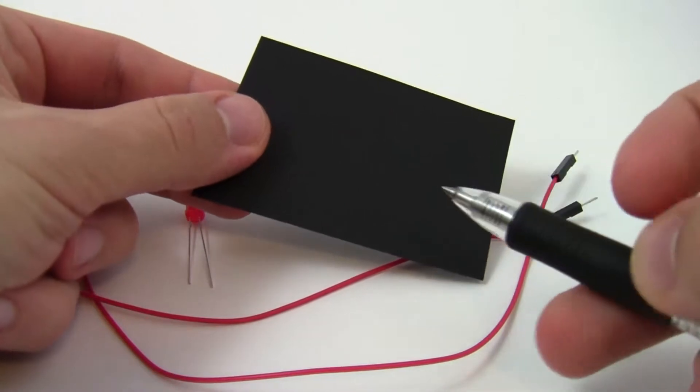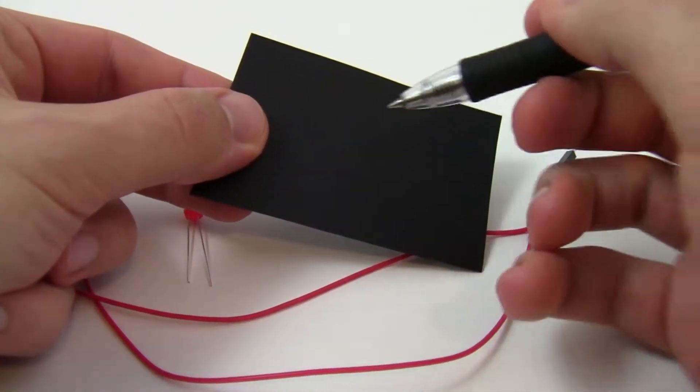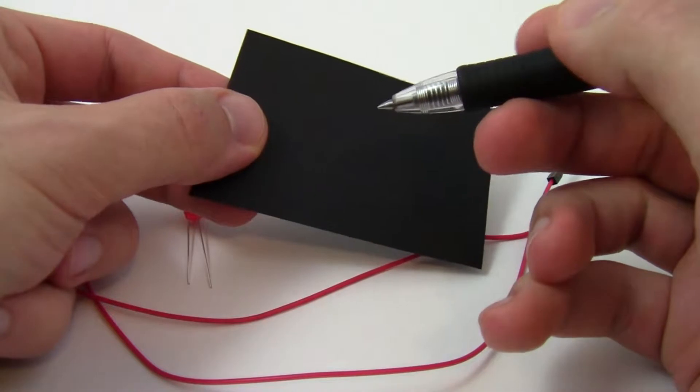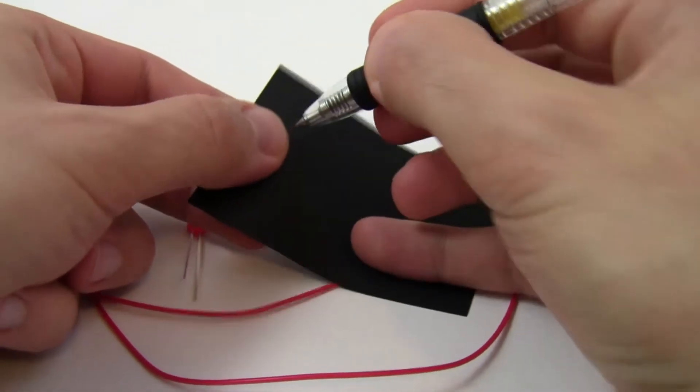I'm going to poke holes in the paper using a pen, but you could use a sharp pencil or an exacto knife if you have adult supervision, and just show both methods.